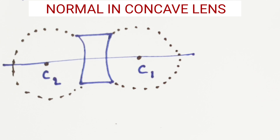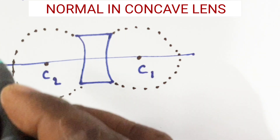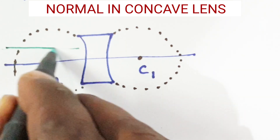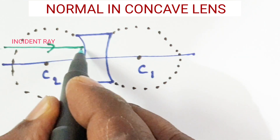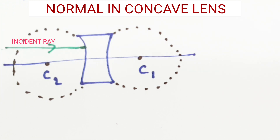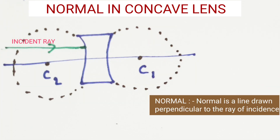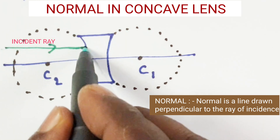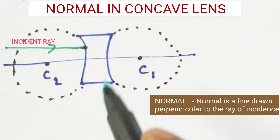Now I am going to incident a light ray at the surface. A light ray is incident at the surface — this is called the point of incidence. To decide the path of this ray, how it will move, we need to draw a normal. Normal, as you know, is a line drawn perpendicular to the surface at the point of incidence.